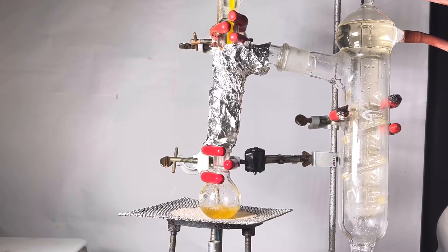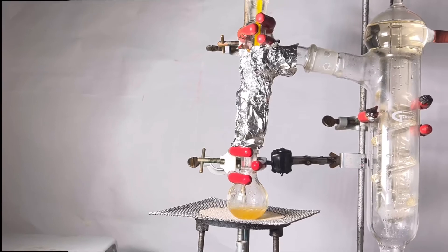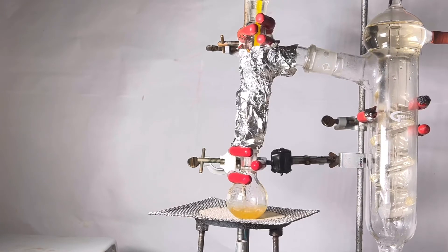When the temperature reads 184 degrees C, a liquid starts to boil and condense through the Friedrich condenser. That is the pure valeric acid.